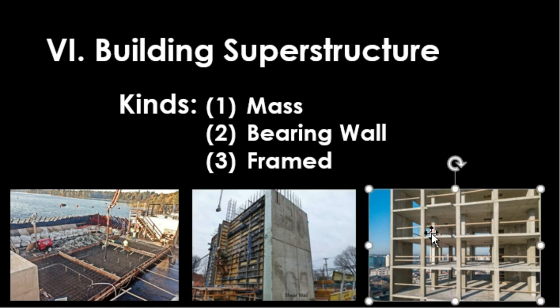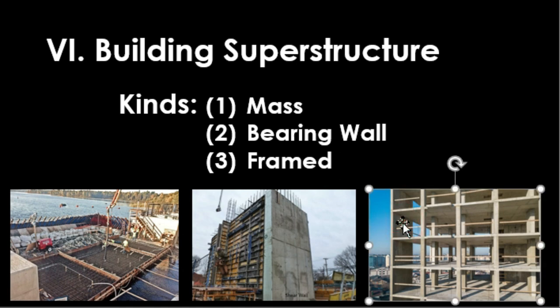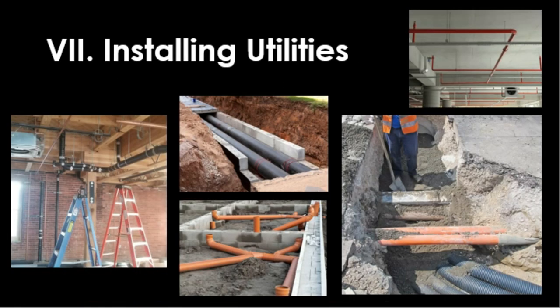Frame superstructures, such as houses, are built with a frame that acts like a skeleton — the parts serve the same purpose as bones in the body. Frame superstructures may be made of steel, reinforced concrete, or wood. The members of a frame are columns or posts with beams connecting one to another.